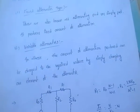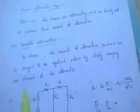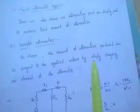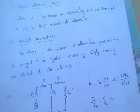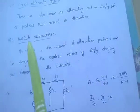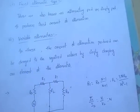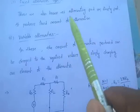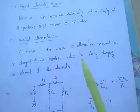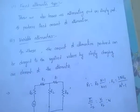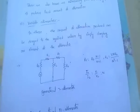Variable type attenuators: the amount of attenuation produced can be changed to the required values by simply changing one element of the attenuator. In case of fixed type attenuators the amount of attenuation will be fixed, but in case of variable attenuators the amount of attenuation can be changed to required values.